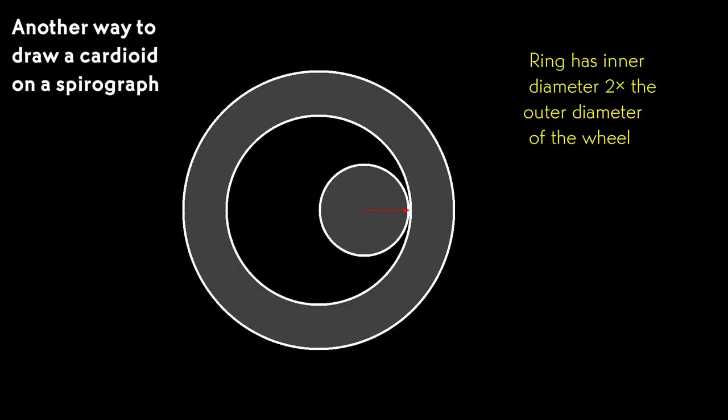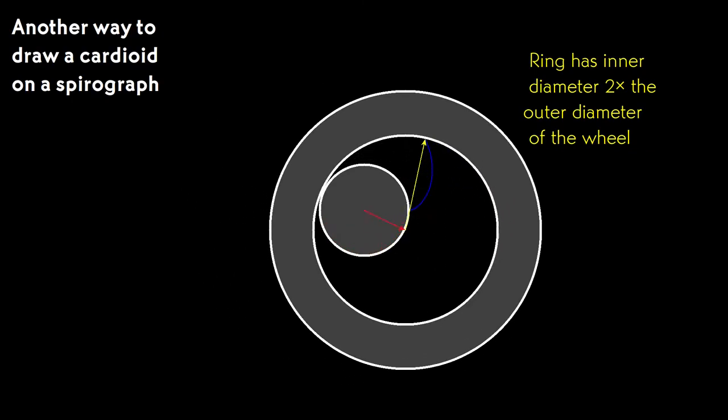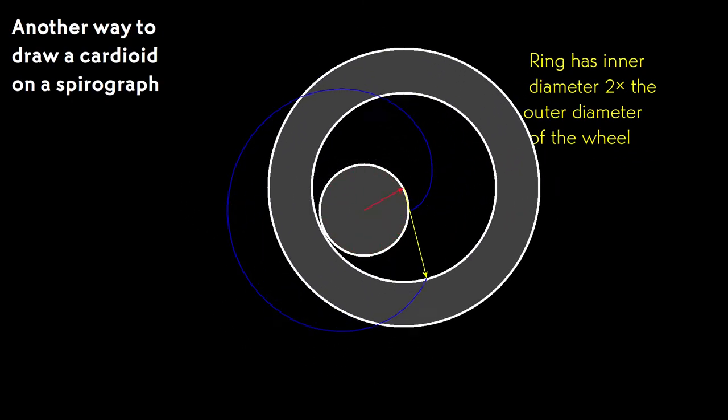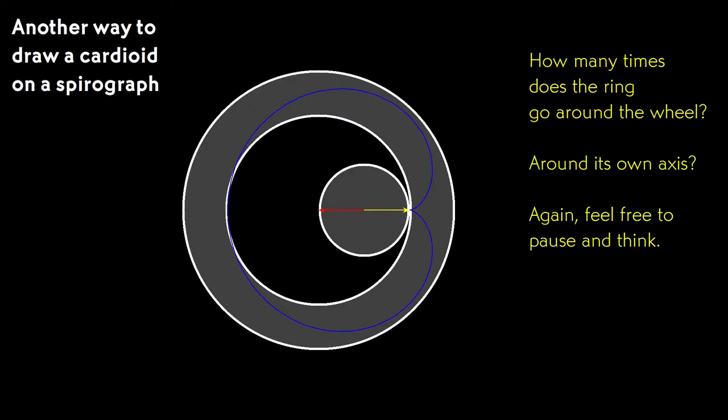There's another way to set up a cardioid on a spirograph. Instead of a rolling gear, use a ring gear that's twice the diameter of the fixed gear and roll it. So how many times does the center of the ring go around the fixed wheel, and how many times does the ring turn about its own axis? This one is a little tougher than the last one, and feel free to pause and think if you need to.